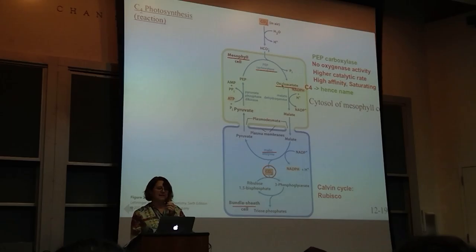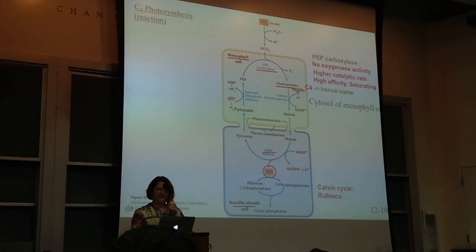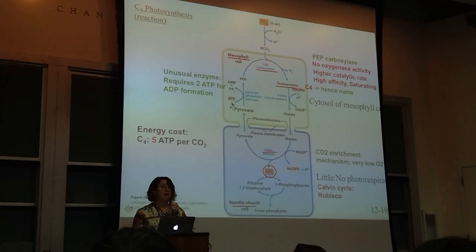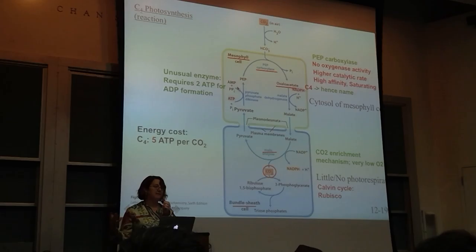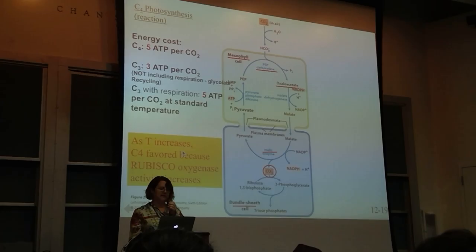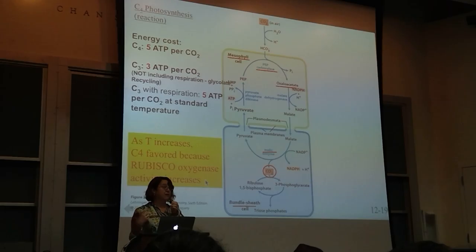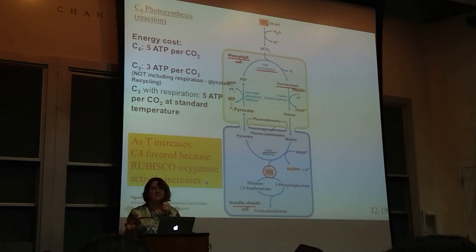It's called C4 because the first place where you get fixed carbon is a C4 4-carbon compound—oxaloacetate. The energy cost is 5 ATP per CO2 under standard conditions: your normal 3 ATP per CO2 plus an extra 2, which are required for this reaction. Whenever you see ATP to AMP, remember it's like two hydrolysis events—two releases of a phosphate group—so you count it as two ATP. This makes the C4 cost much more similar to the true C3 cost when you take photorespiration into account.